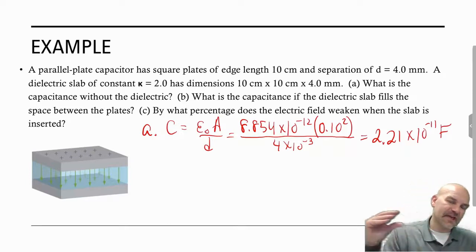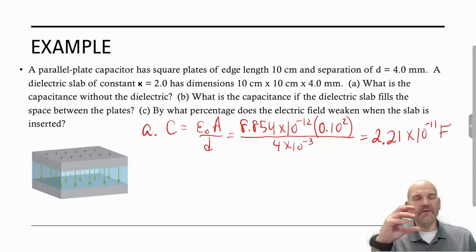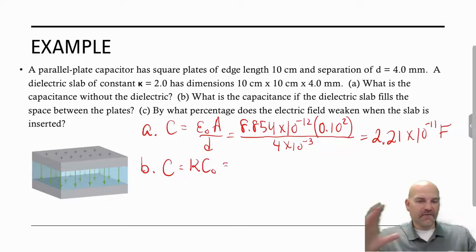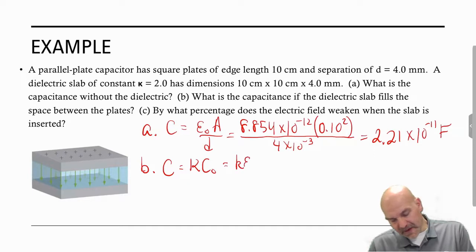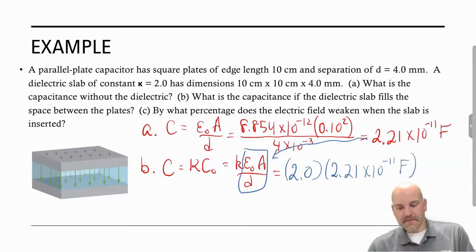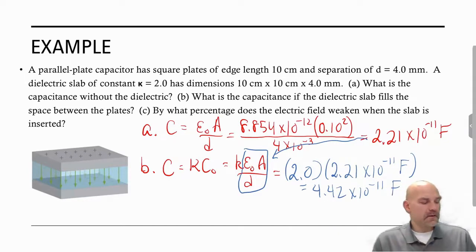Now we're going to slide the dielectric into the capacitor to fill that entire space. All we have to do is simply do kappa times our initial. If you want formula wise, full-fledged formula, it's just simply kappa epsilon naught A over D. But we've already calculated this, so all we're going to do is 2.0 times 2.21 times 10 to the negative 11th farads, and that's going to give us a value of 4.42 times 10 to the negative 11th farads. So you can see here our capacitance has increased.